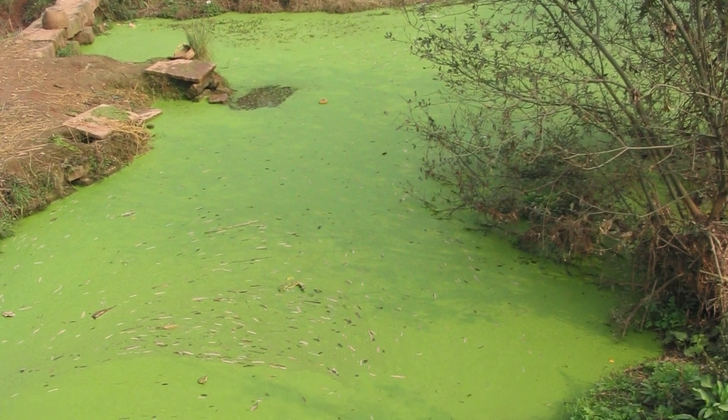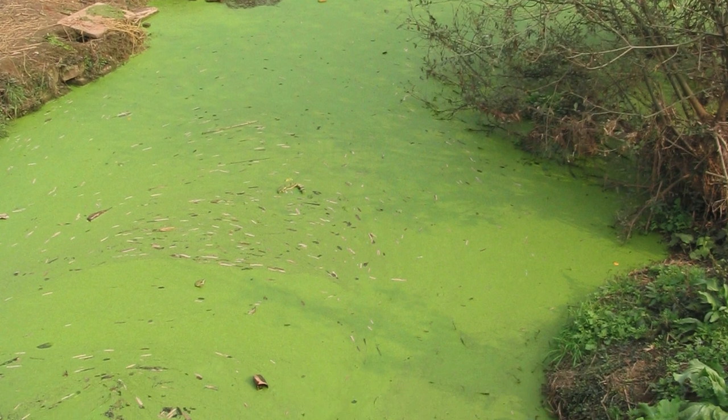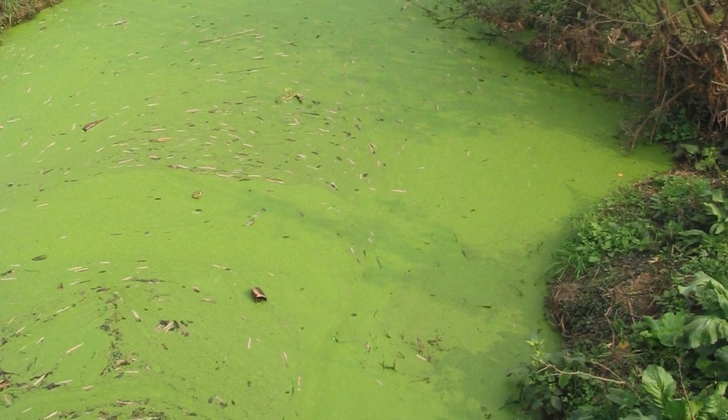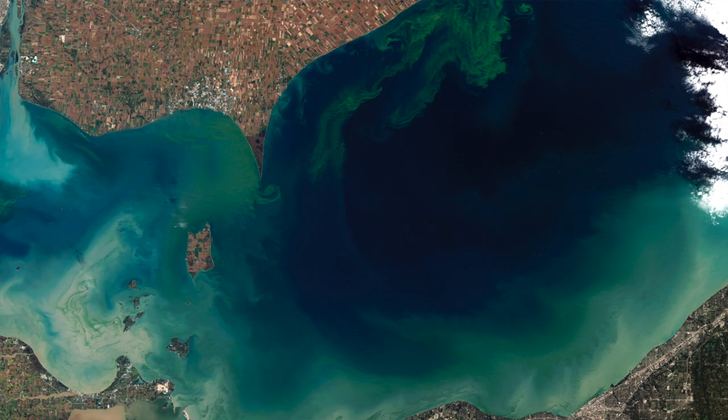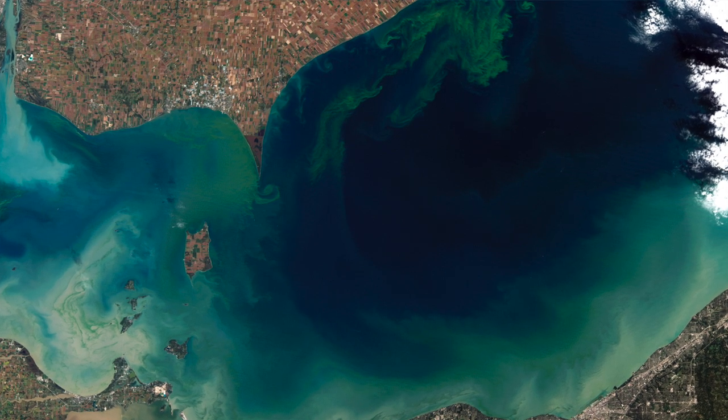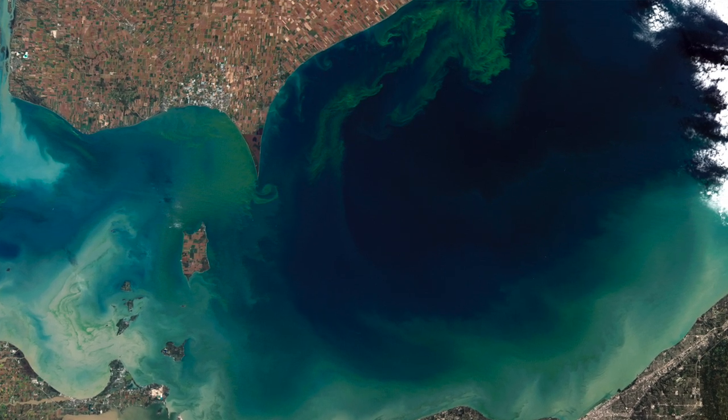So what you see here is a picture of Lake Erie - this discoloration of water is due to an algal bloom.